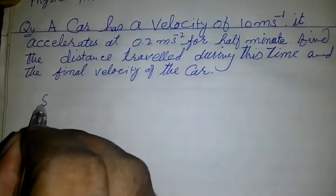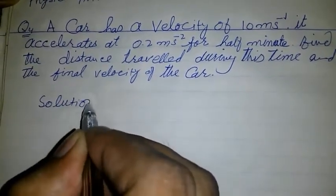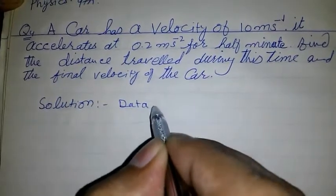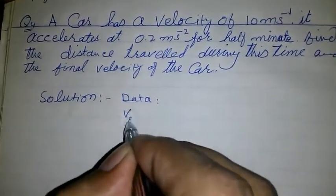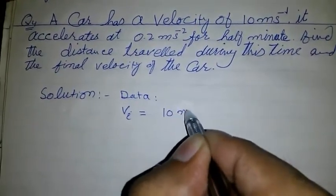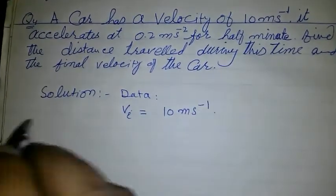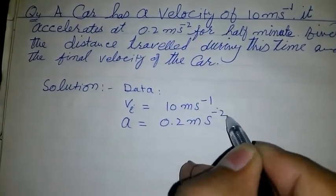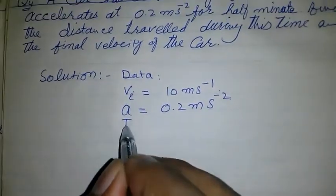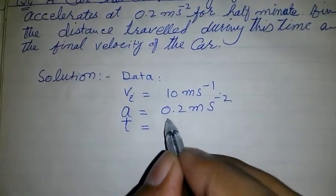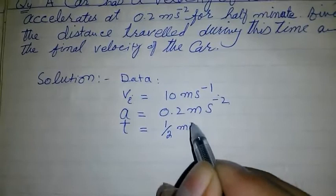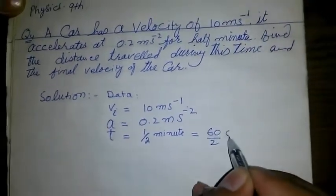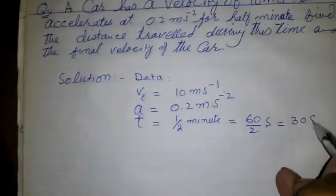Let's solve this. First of all we write the data. Initial velocity Vi is given which is equal to 10 meter per second. Then acceleration a is given 0.2 meter per second squared, and time t is given half a minute which is equal to 60 over 2 seconds, which is equal to 30 seconds.